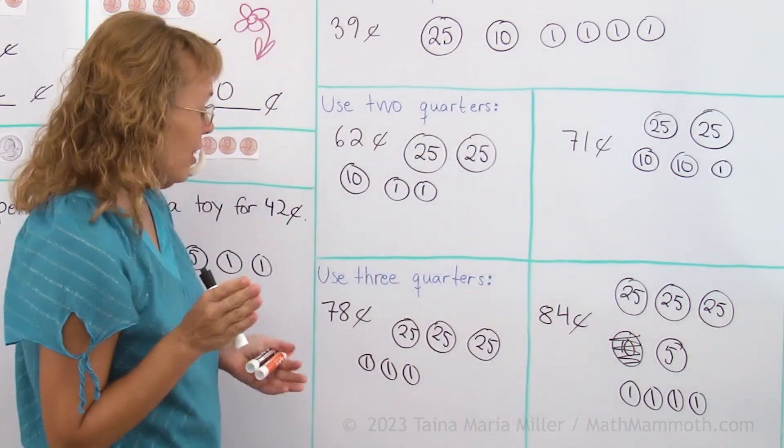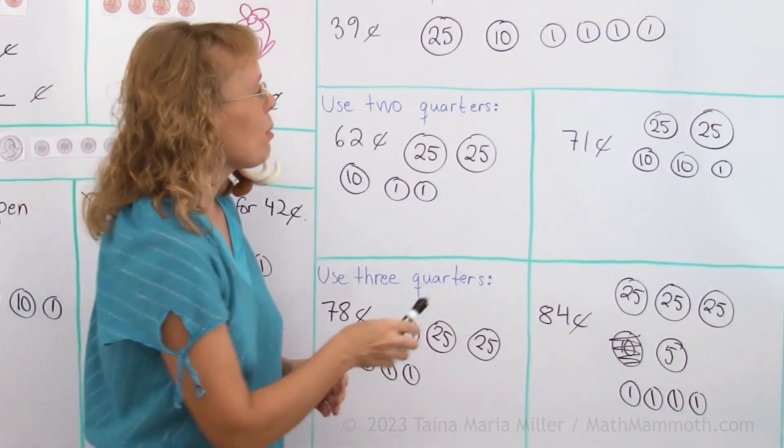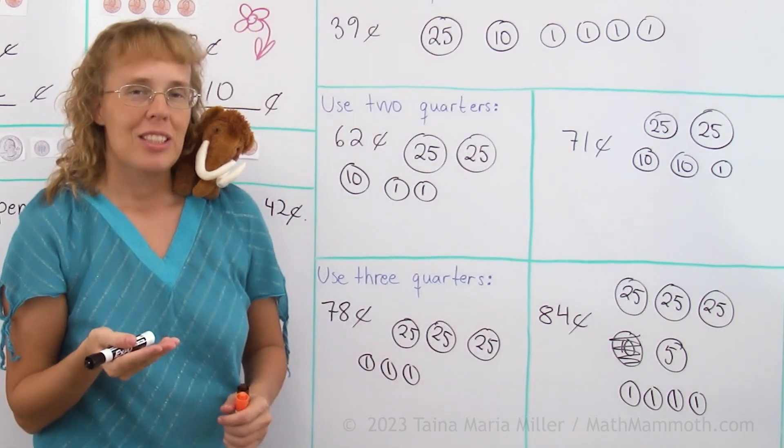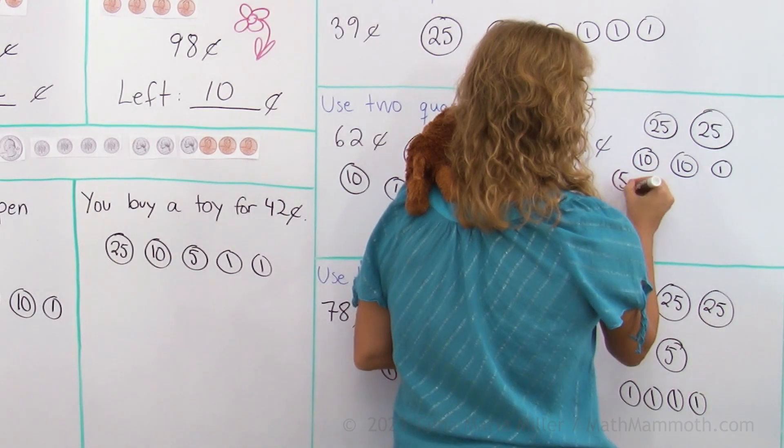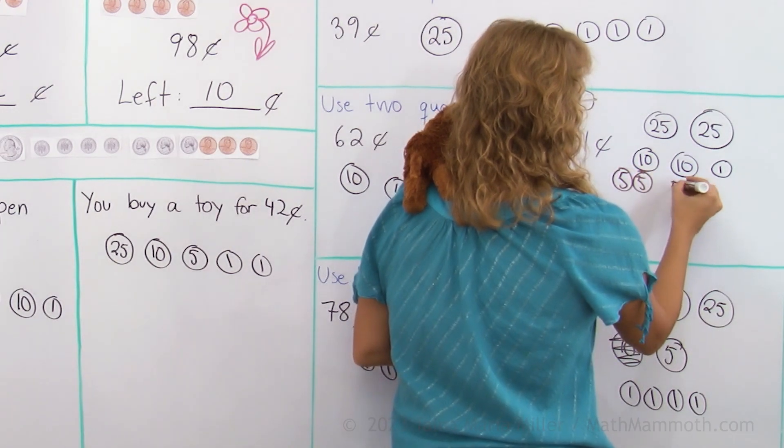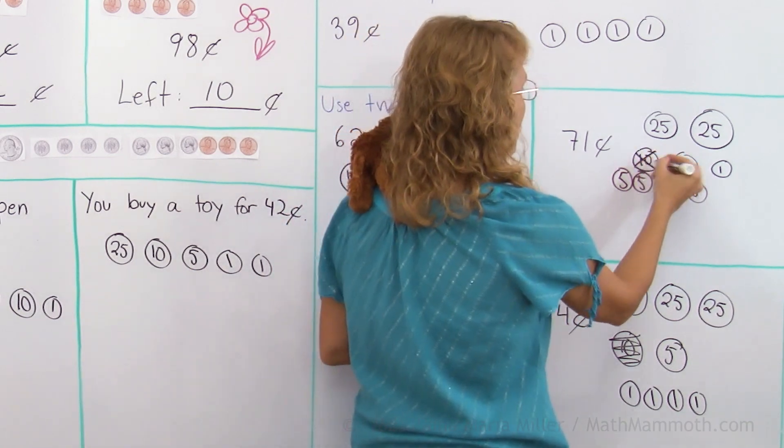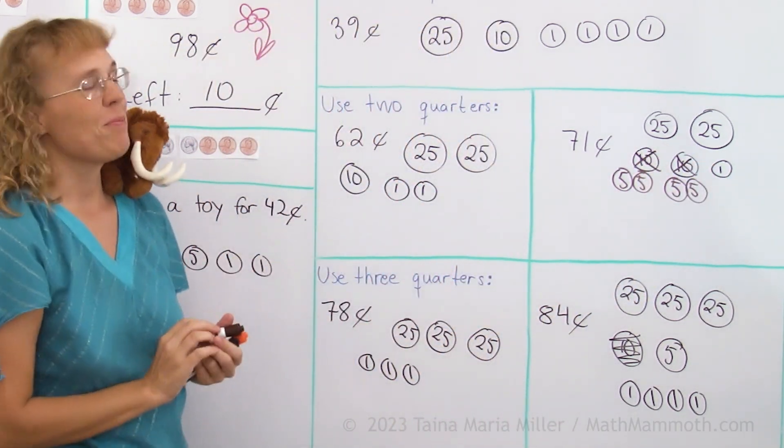However, for many of these, there could be a different way of doing it. For example, here, if you have 10 and 10, two dimes, you could use nickels instead, right? You could use here, instead of one dime, you could use two nickels. So that's a different way of making it. Same here.